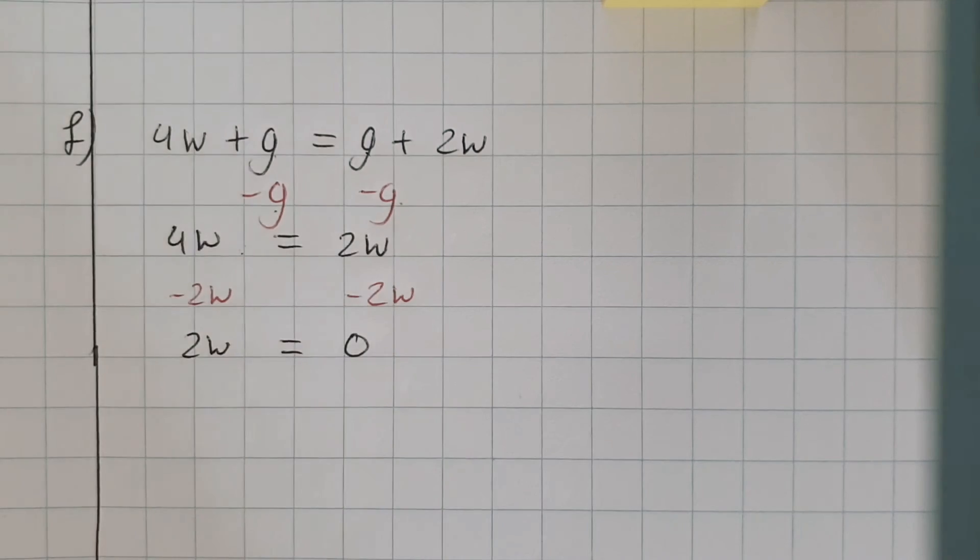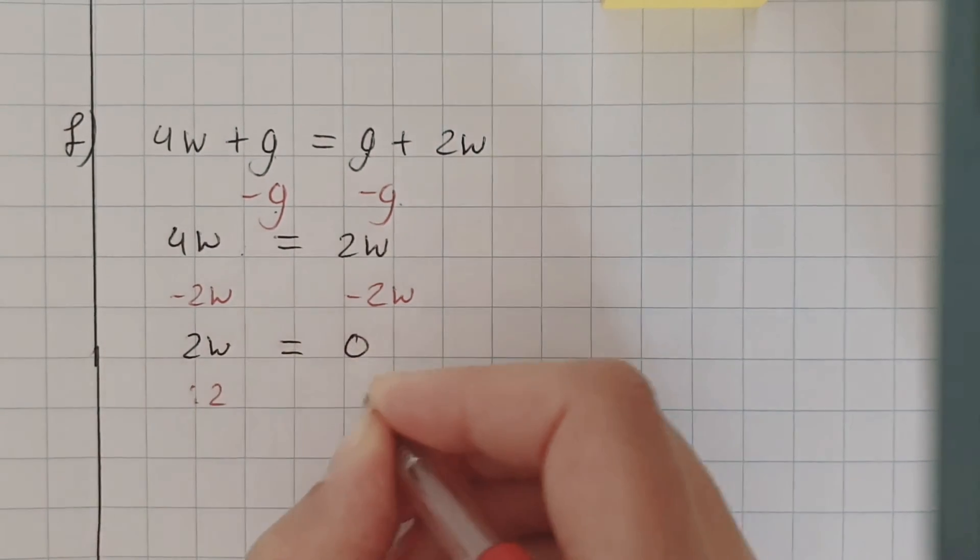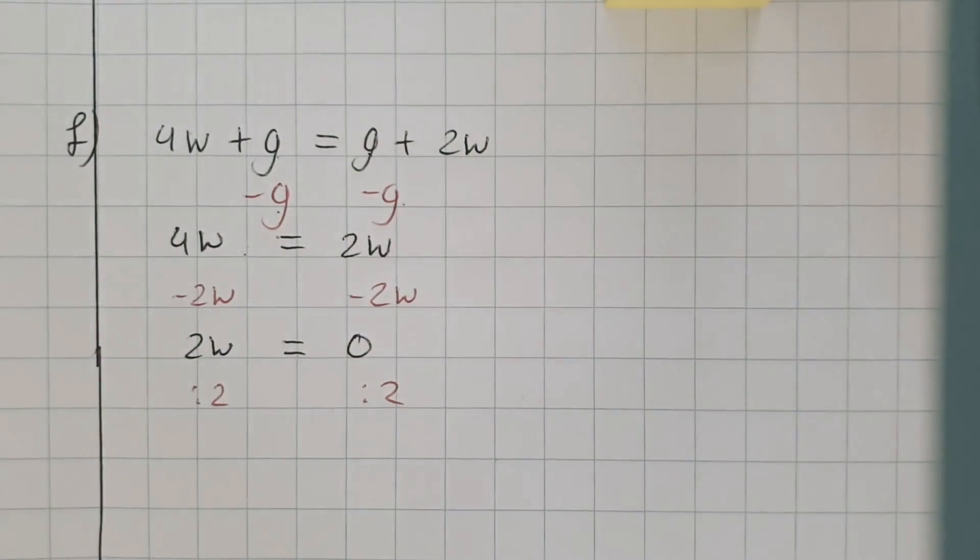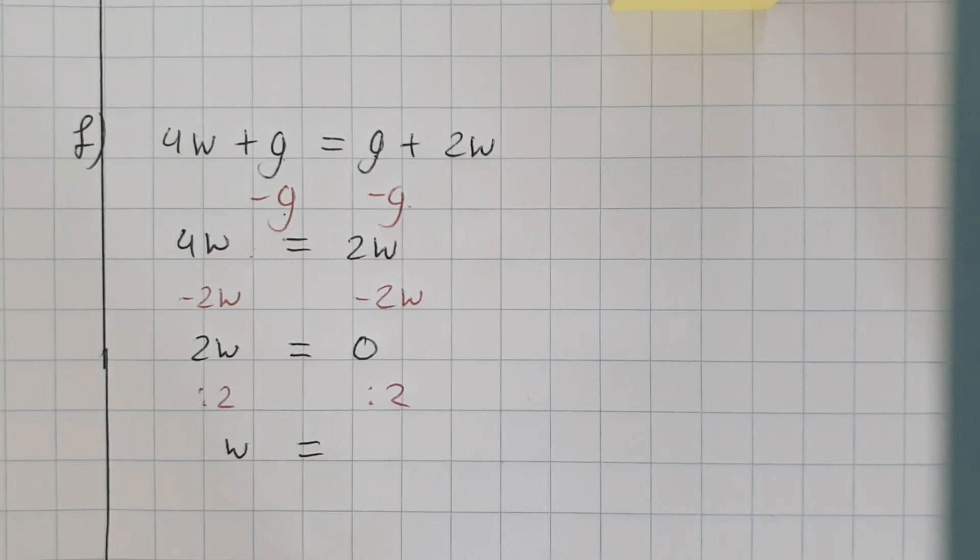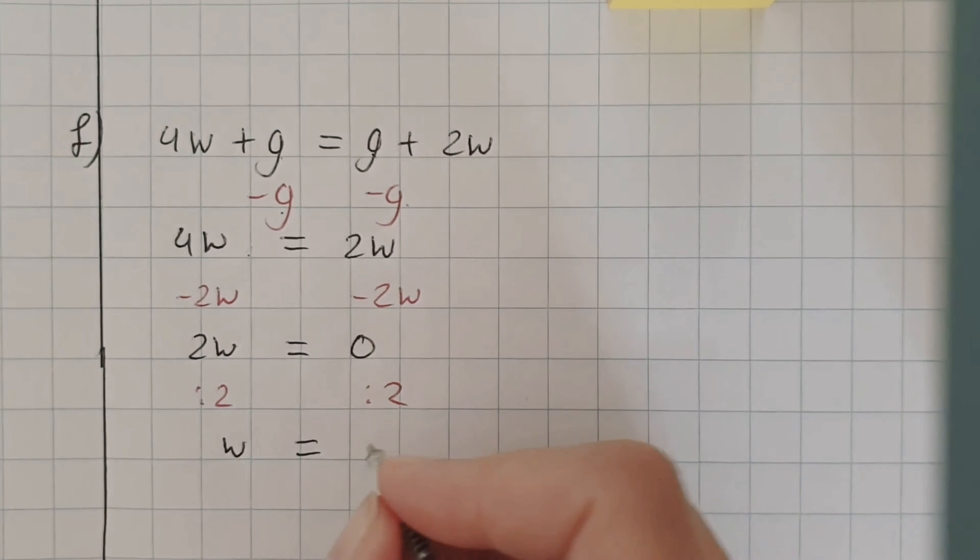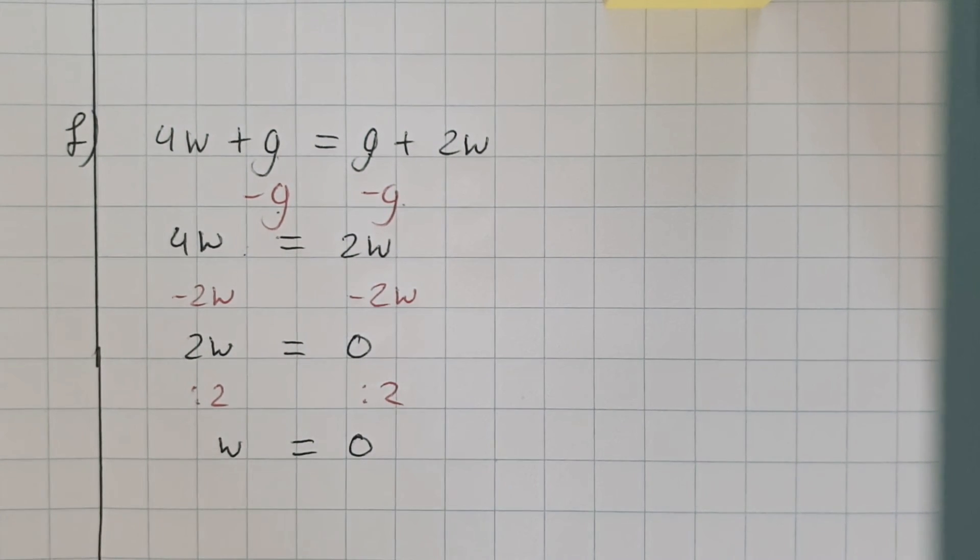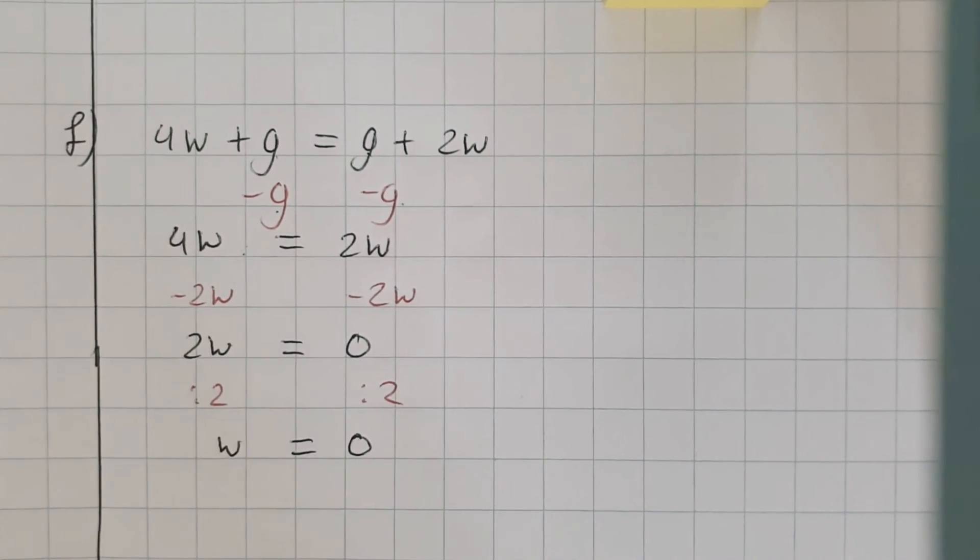This is a 2 and this is a w. Now I'm going to do a divided by the number in front of it, in front of the letter. And that's w equals... How much is 0 divided by 2? It's just 0. So in this case, w equals 0. That's the solution.